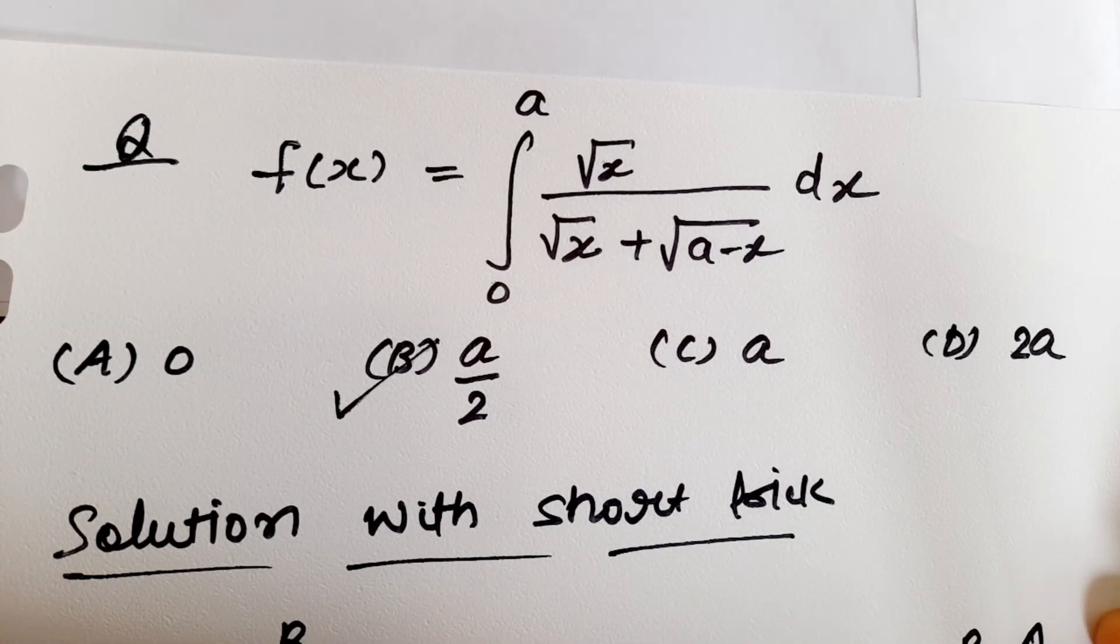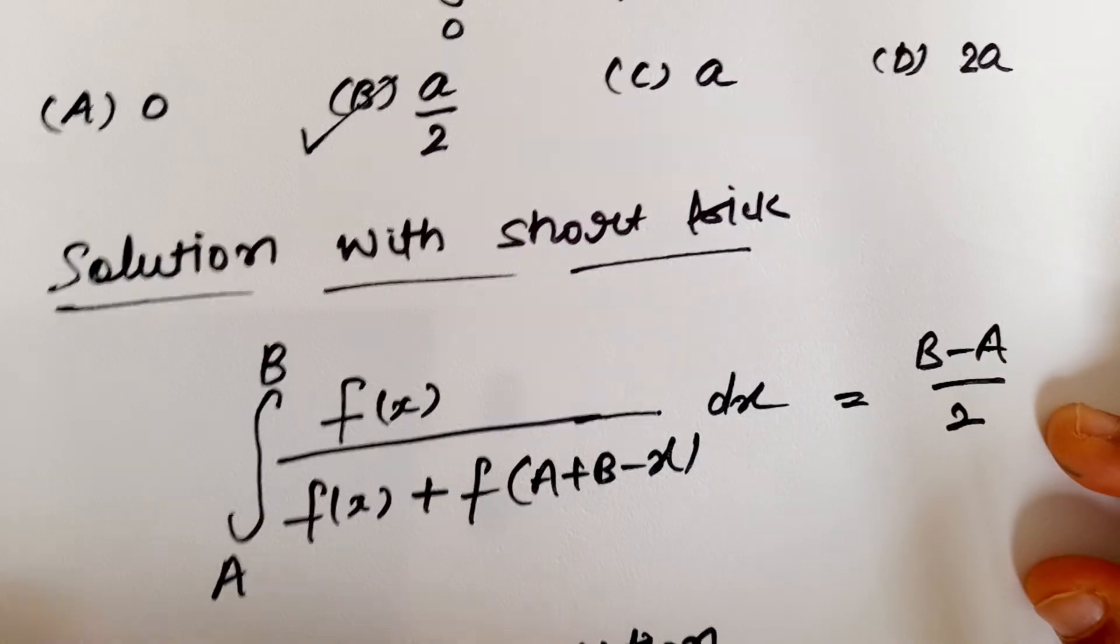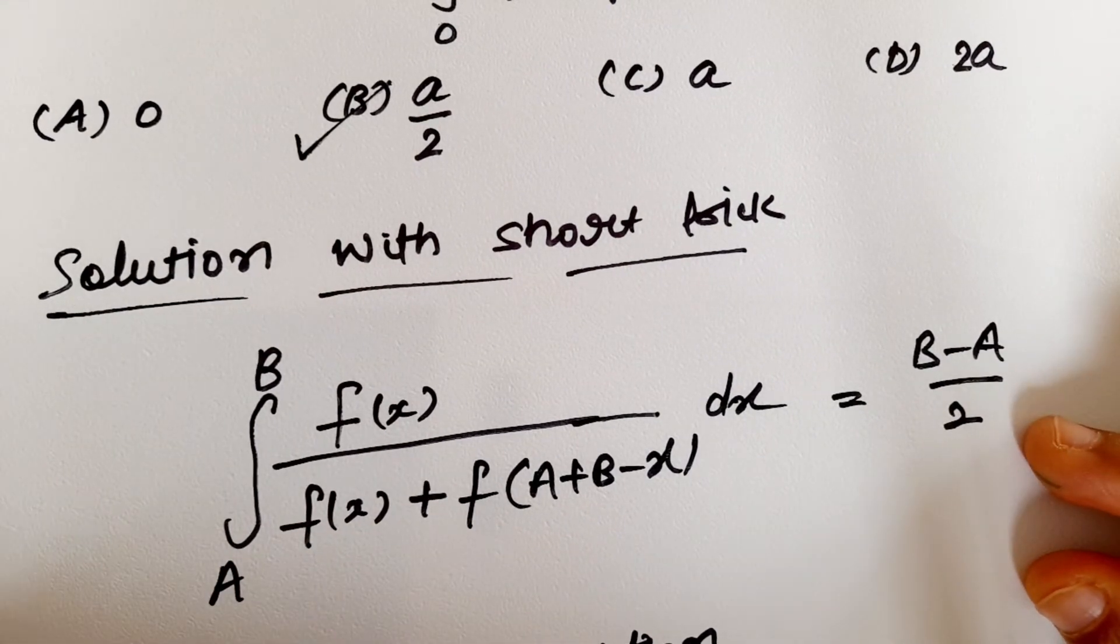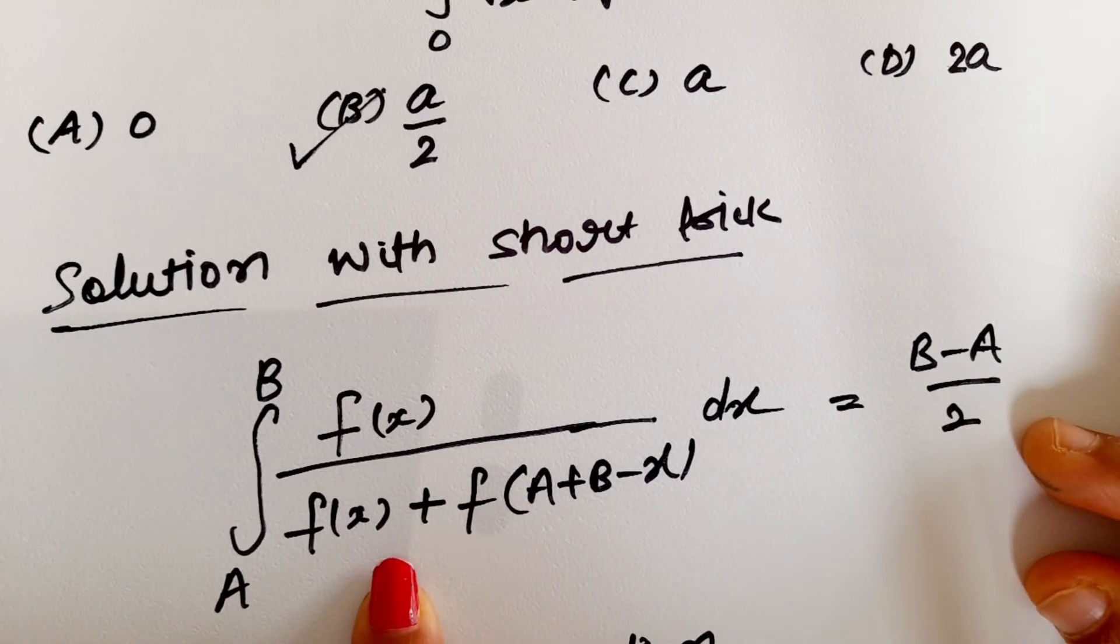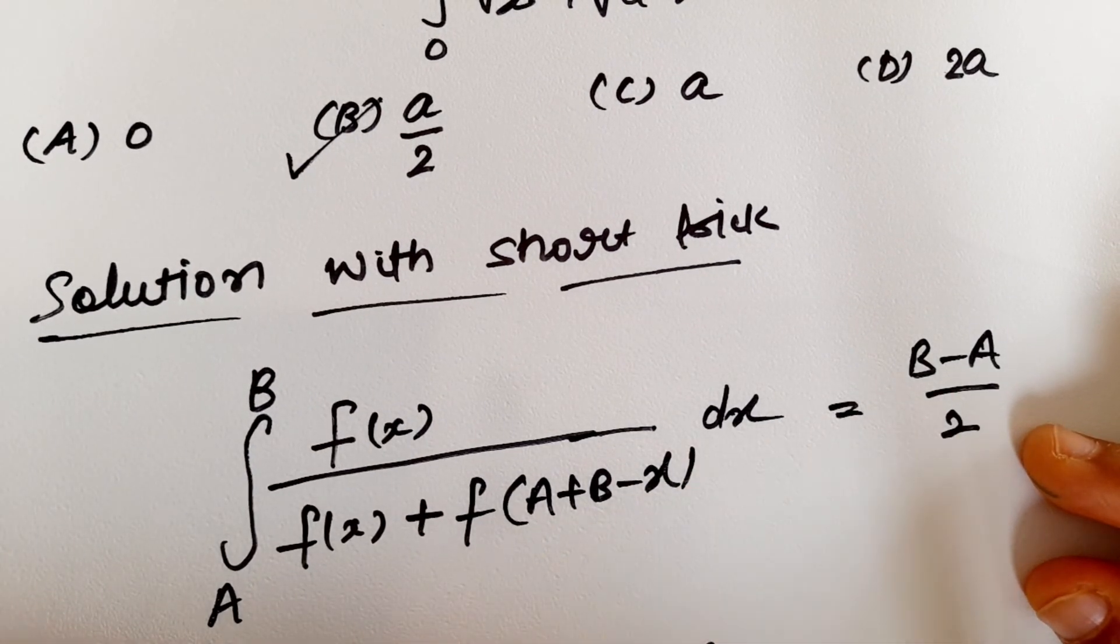With the short trick, for the integral of f of x plus f of a plus b minus x dx, the result is b minus a upon 2.